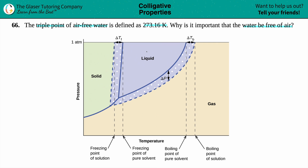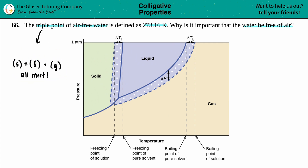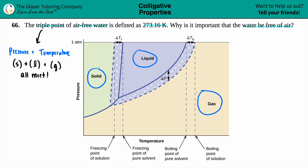The triple point, by definition, is where your solid, your liquid, and your gas all meet. It is the specific pressure and the corresponding temperature at which solid, liquid, and gas will all coexist. So these three regions have to meet at a single point, generally right here on the diagram.